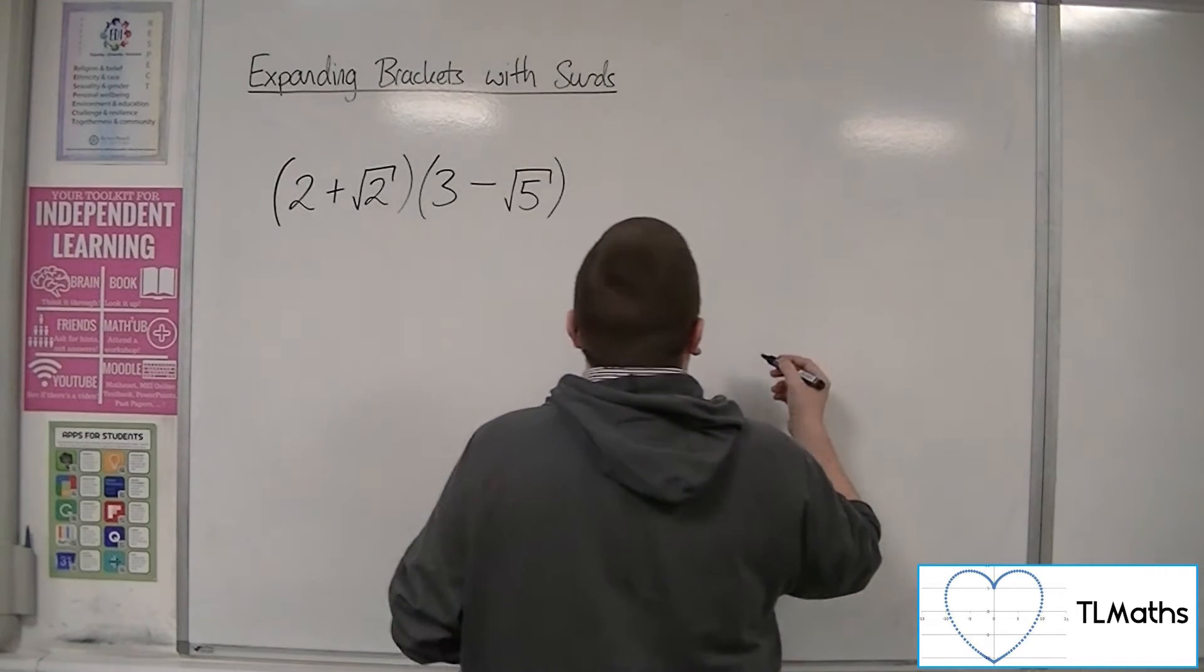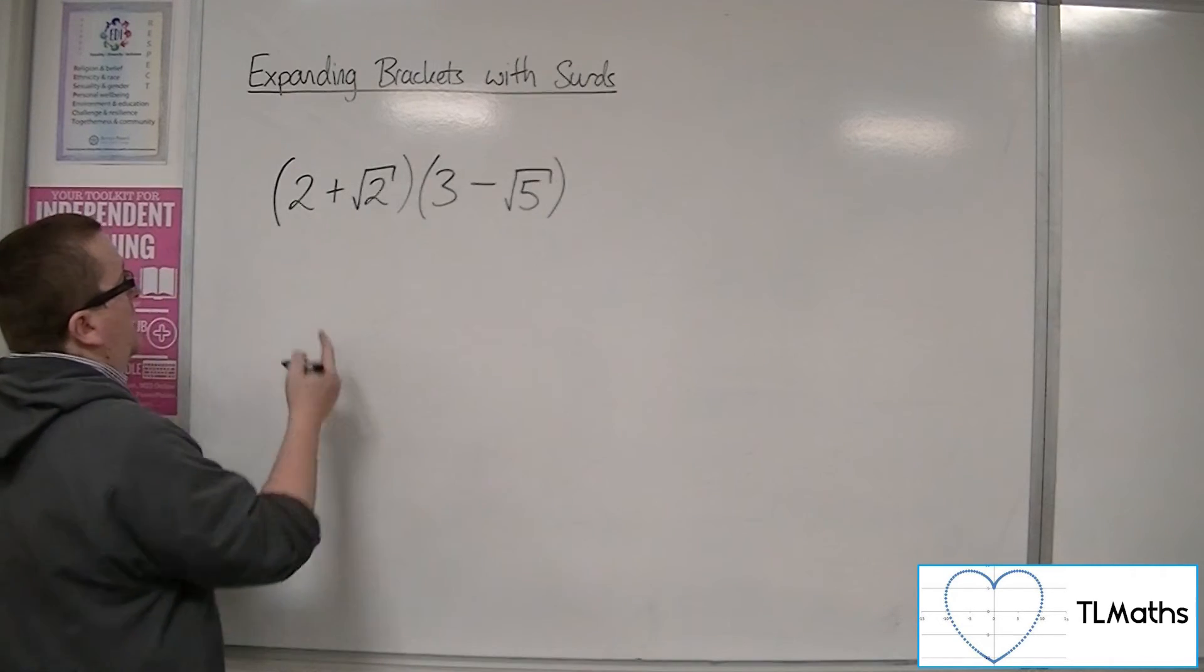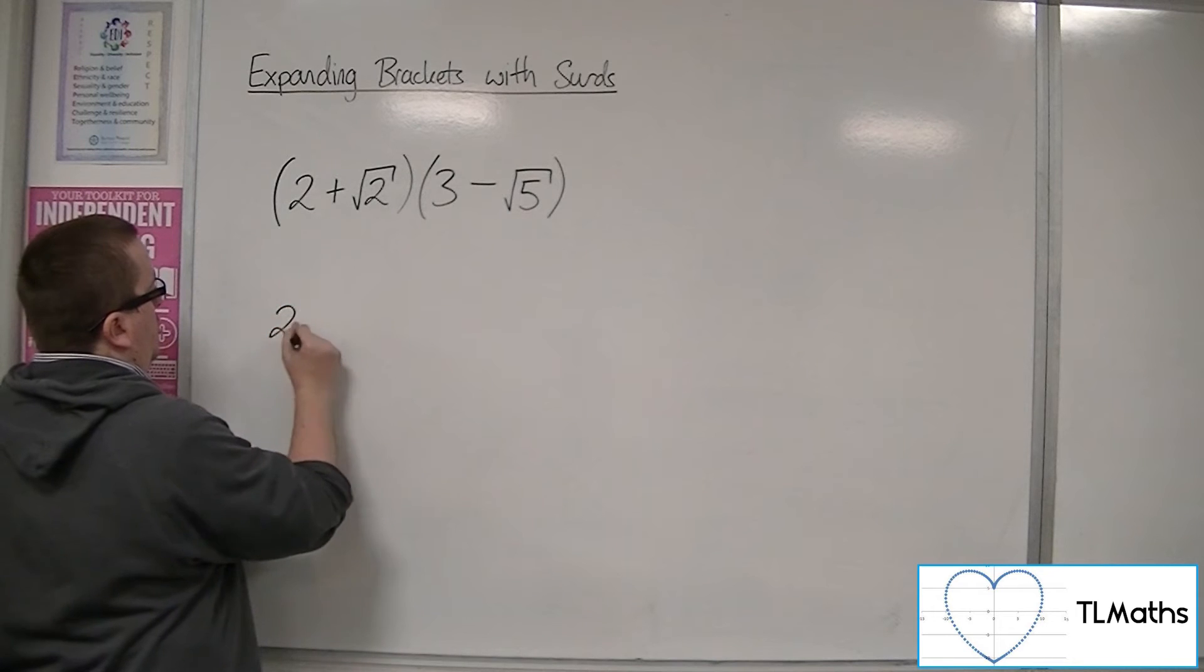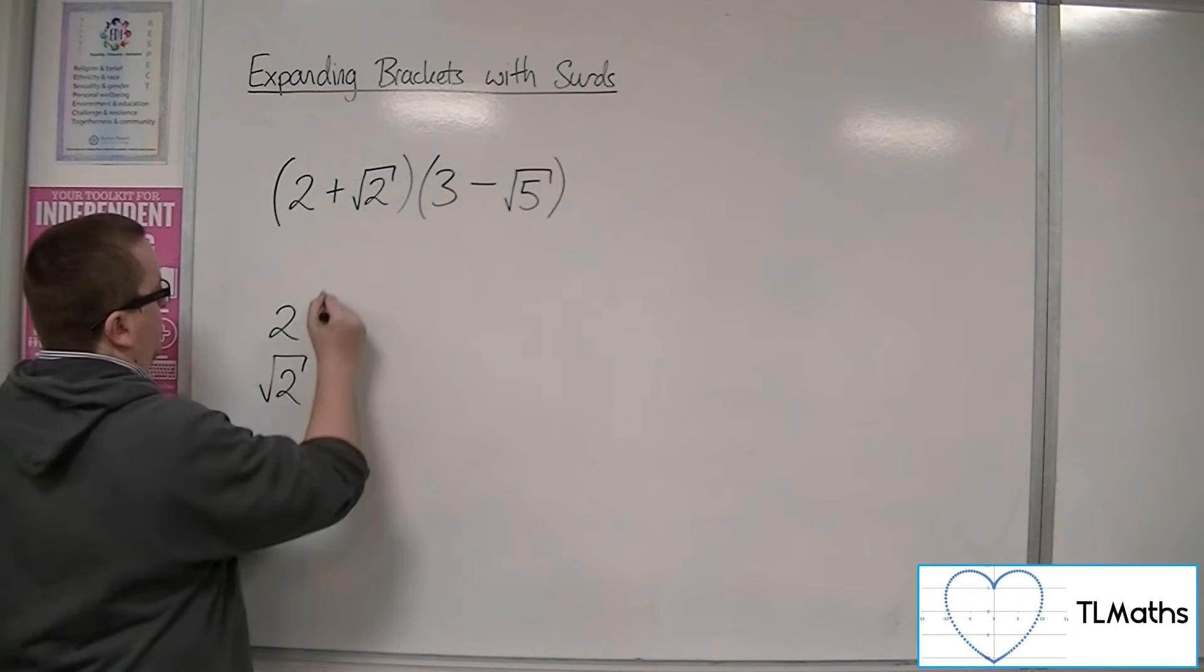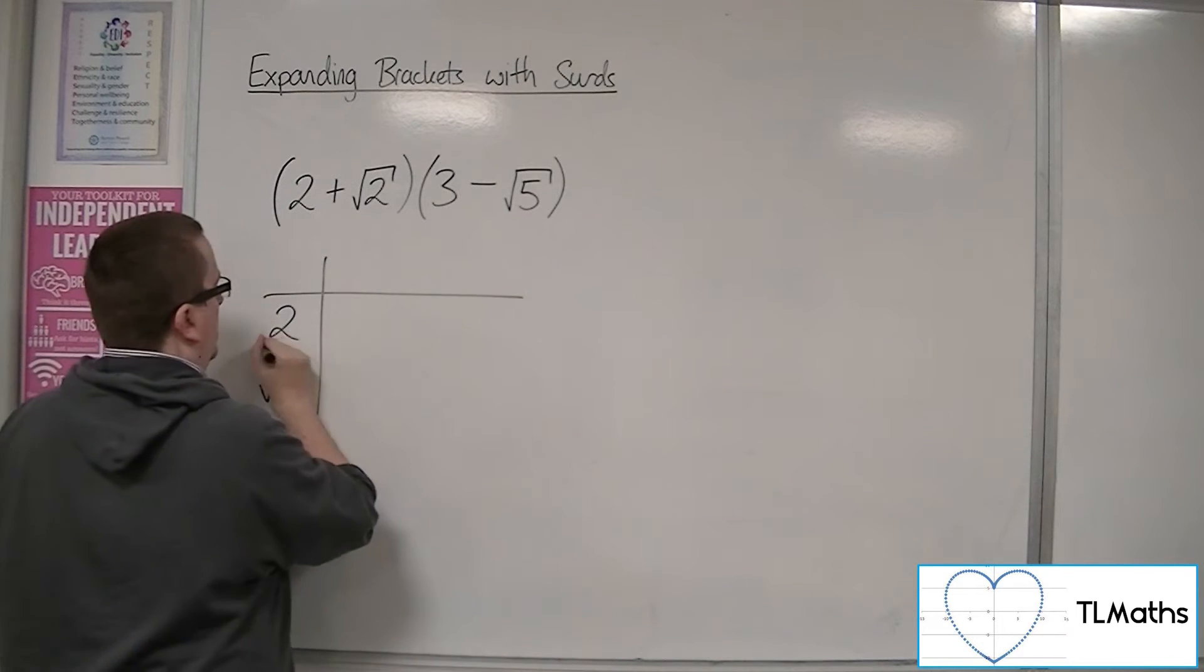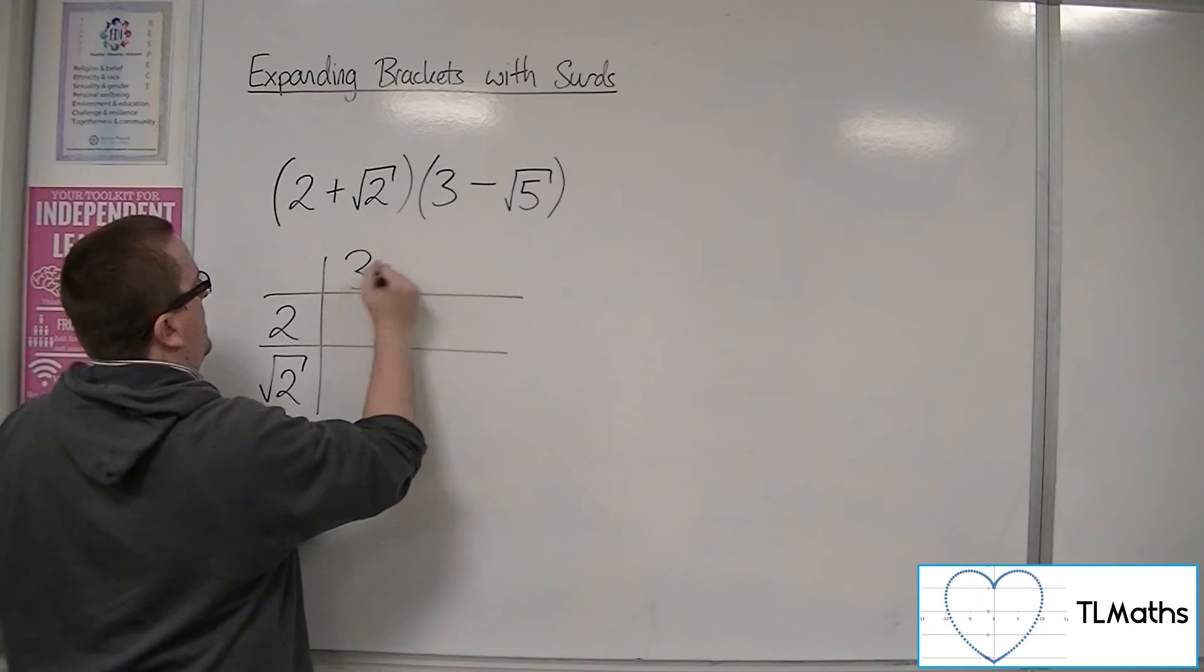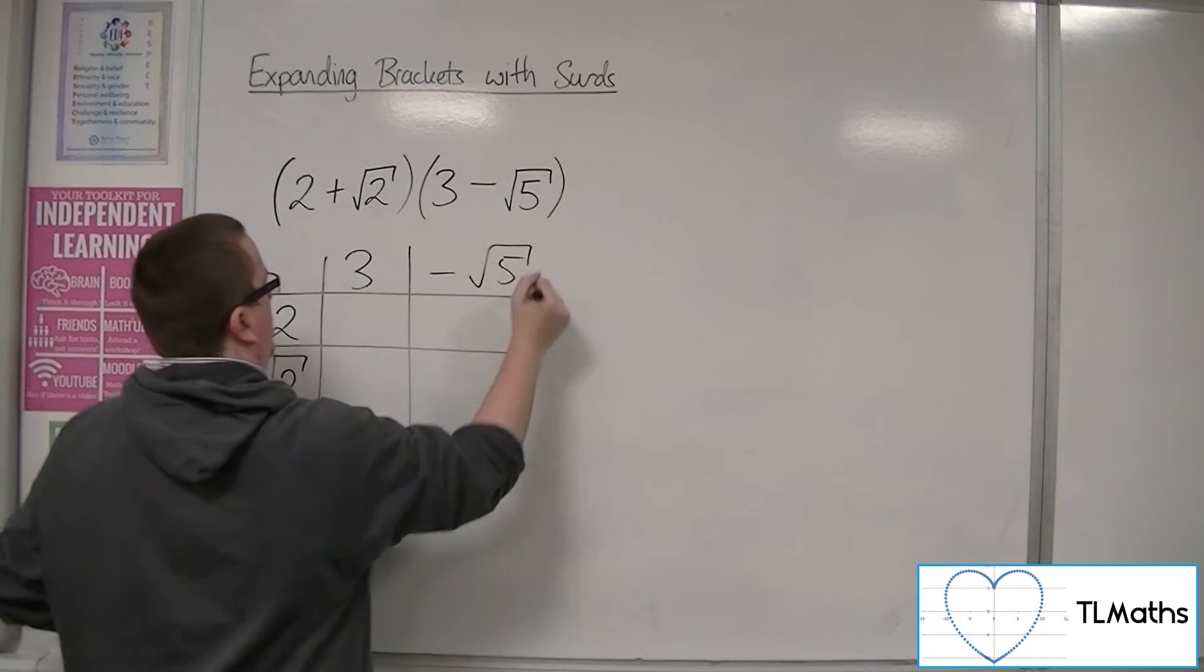So the grid that you would set up in this would be 2, root 2, and then 3 and minus root 5.